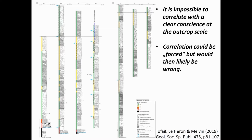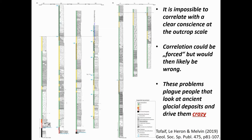You could try correlating outcrops, but arguably you would be forcing the correlation, which is bad practice in science — and your model is likely to unravel very quickly. These problems plague people who look at ancient glacier deposits. The solutions to these problems remain enigmatic, so we need to do more work to correlate these rocks objectively, embracing new techniques which I'll talk about in the next few minutes.